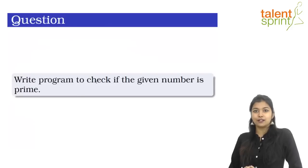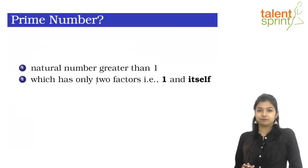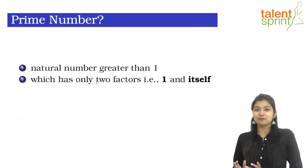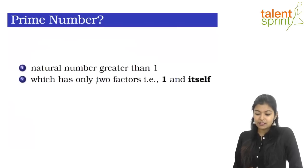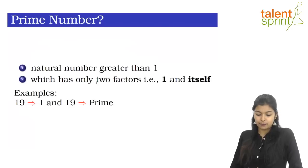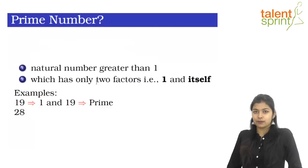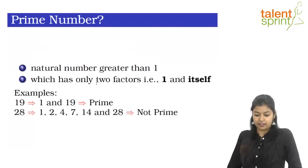The program we'll examine is: check if the given number is prime. A prime number is a natural number greater than one that has exactly two factors — one and itself. For example, 19 is a prime number since it has only two factors: one and itself. On the other hand, 28 is not a prime number as it has multiple factors.